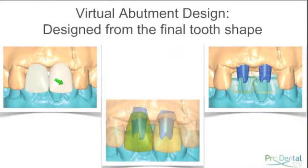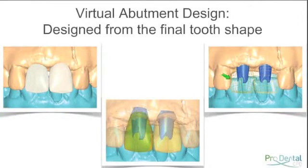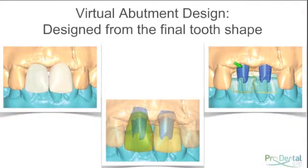The abutment is designed to be large enough to give maximum surface area for bonding, but also small enough to allow sufficient layering of material so the desired aesthetic result can be achieved. The fact that we have this design from the final tooth also means that the cement margin is finished where we want it to be. When we fit the abutment and the final crown, the cement margin is much closer to the mouth and far less sub-gingival than if we were using a modified stock abutment.